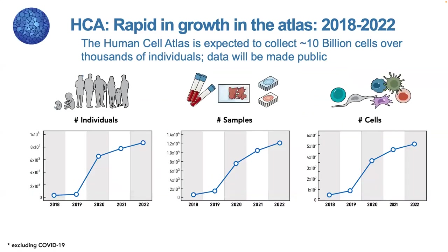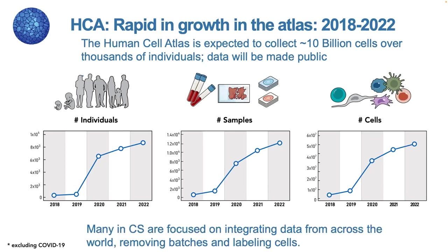The Human Cell Atlas, which I'm involved in, really led to rapid growth. This is why a lot of computer scientists have gotten excited about single-cell data — people in machine learning love a lot of data. Now we have 50-something million cells available. That's a sample size people can do stuff with, and the Human Cell Atlas hopes to get 10 billion cells, which will allow you to power some very sophisticated analysis.